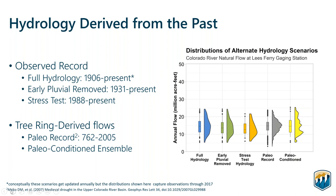We also have ensembles derived from tree rings. The direct paleo record was reconstructed from 762 to 2005, shown in the gray distribution, which has a rich variety of annual flows — including flows lower than what we've observed. The largest part of that distribution is near our full hydrology record. But these distributions don't capture the sequence of annual flows; the paleo record does have longer droughts and longer wet spells, which is important information about what the basin has experienced and could experience in the future. We also have the paleo-conditioned ensemble, which combines statistical sampling techniques with that paleo record and is represented in the light yellow — more constrained to observed annual flow volumes but with greater variety in sequences.